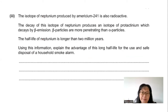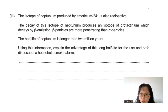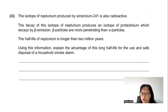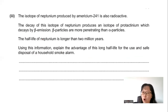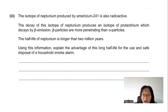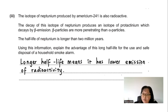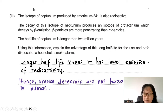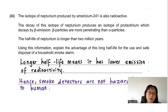Part B3: The isotope of neptunium produced has a half-life longer than 2 million years. Explain the advantage of this long half-life for safe disposal of a household smoke alarm. A longer half-life means lower emission of radioactivity at any given time. Therefore, these smoke detectors are less hazardous to humans when disposed of.